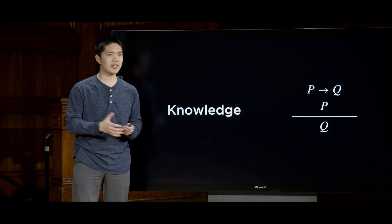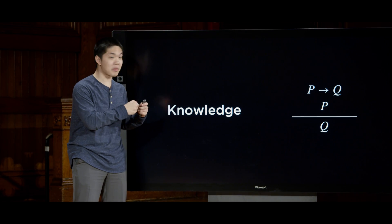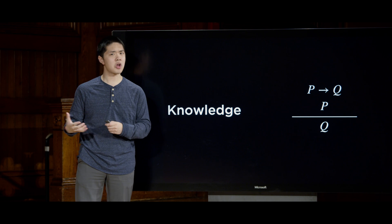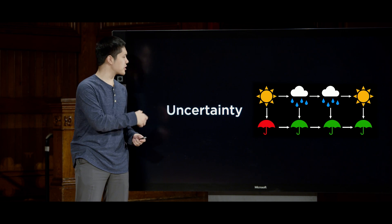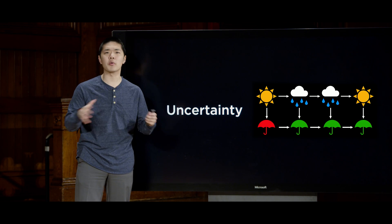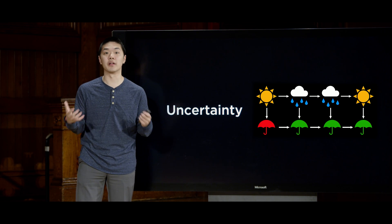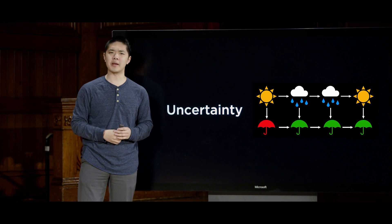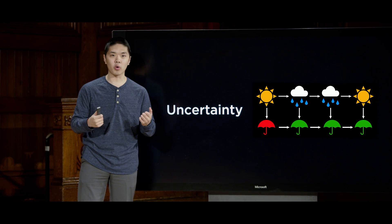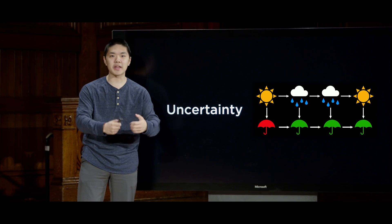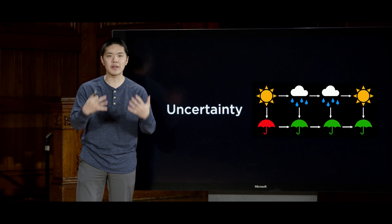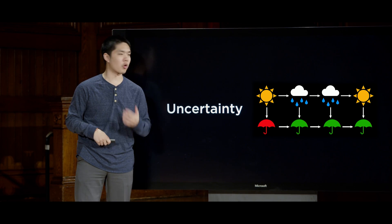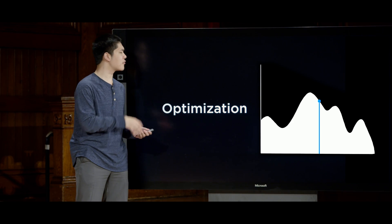We'll then look at how AI can represent information, both knowledge that our AI is certain about, but also information and events about which our AI might be uncertain, learning how to represent that information, but more importantly, how to use that information to draw inferences and new conclusions as well.